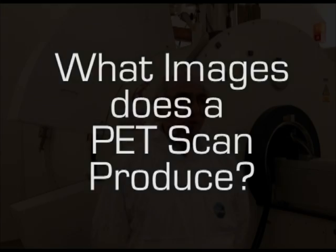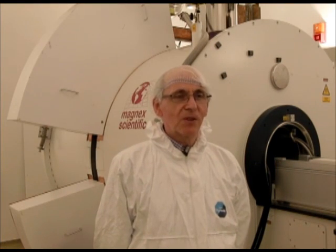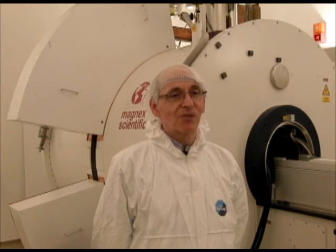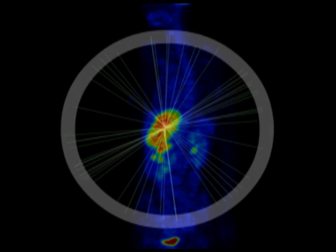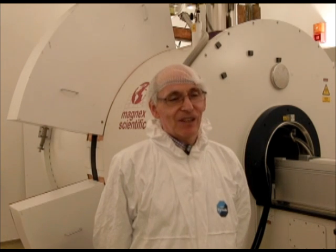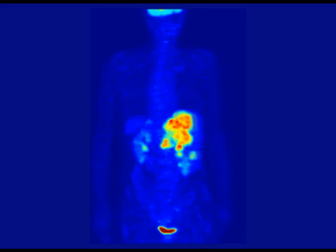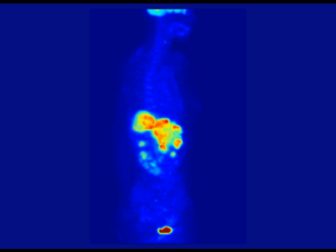Initially a PET scanner produces what we call lines of response, which are lines drawn between the pair of detectors that have simultaneously detected the two gamma rays produced. In a typical PET scan you might have 100 million of these lines of response, and a computer then figures out the most probable distribution of the decays. The image that clinicians look at is the computer-generated summary of where the decays took place.